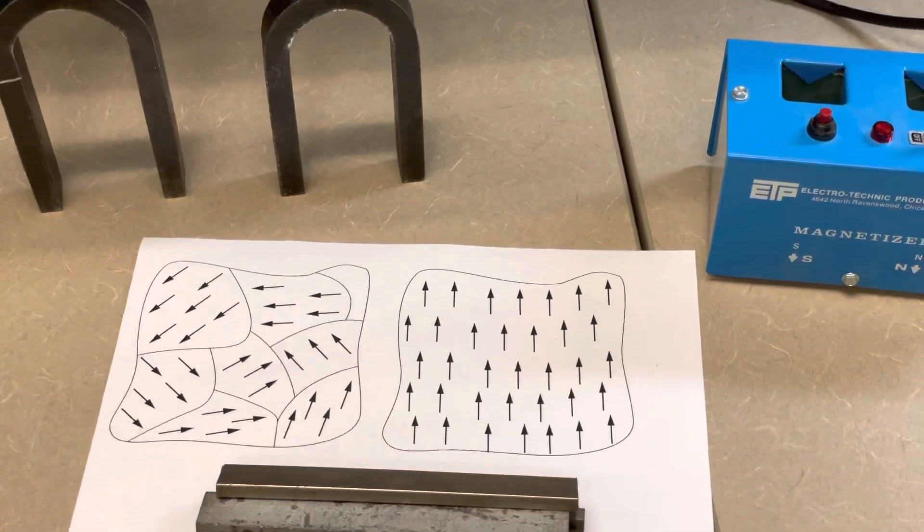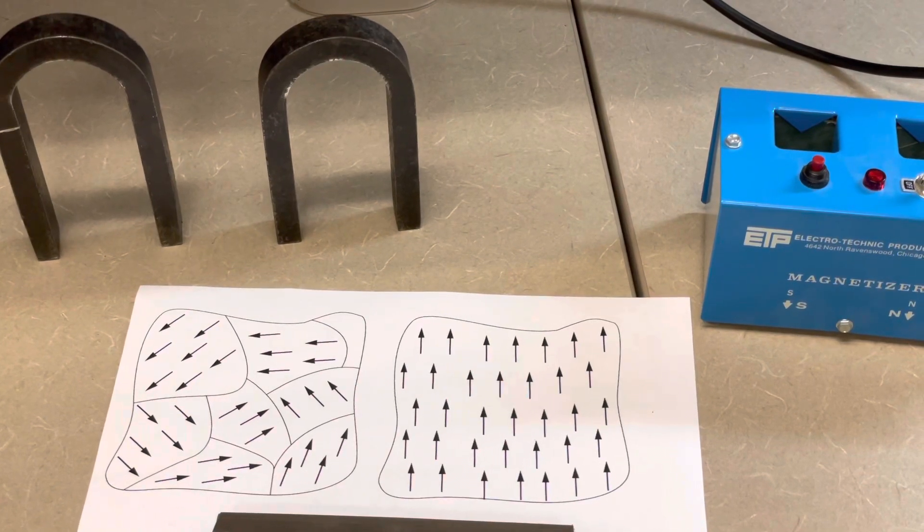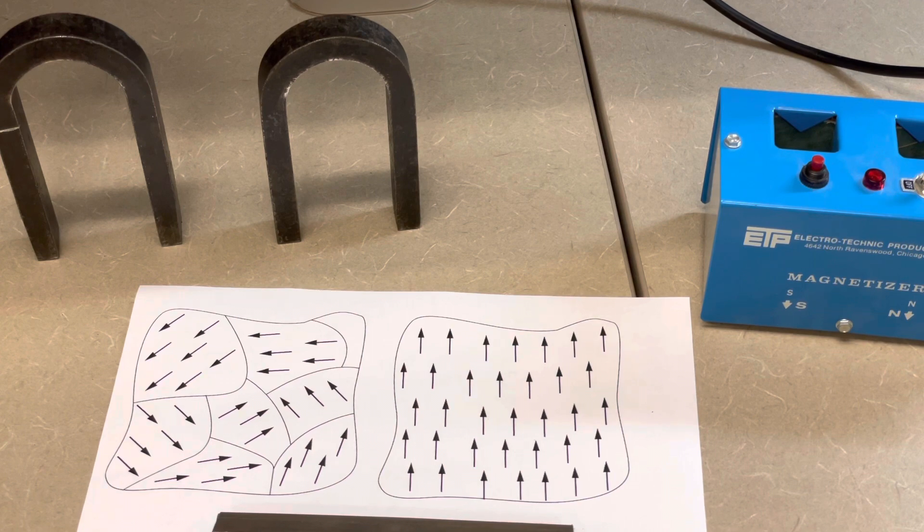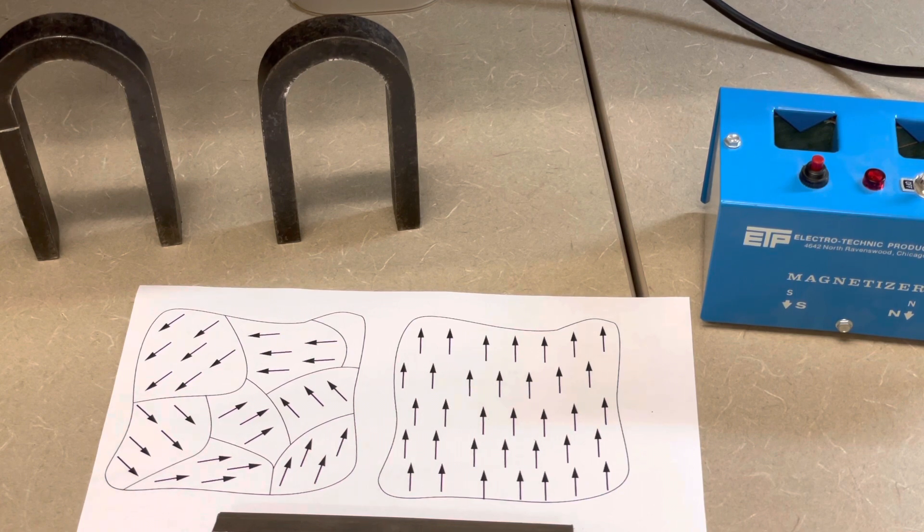The way that this works is normally you have electrons that are just kind of arranged every which way in iron. And when you run an electric current through them, you can arrange all the domains of those electrons in the same direction. And then your magnet ends up with a north end and a south end.